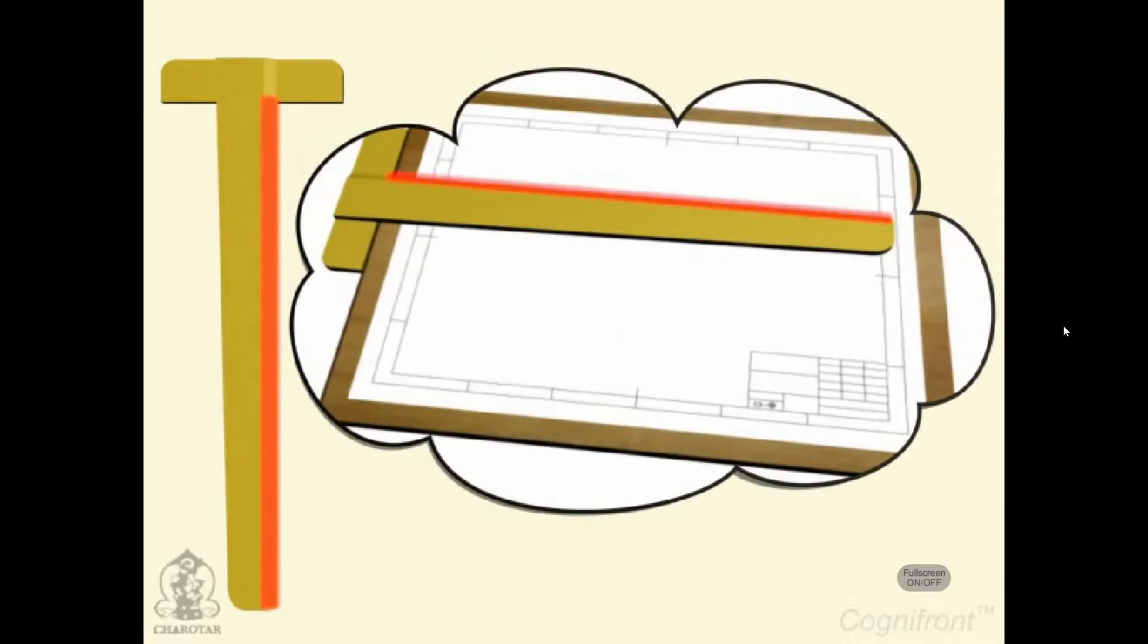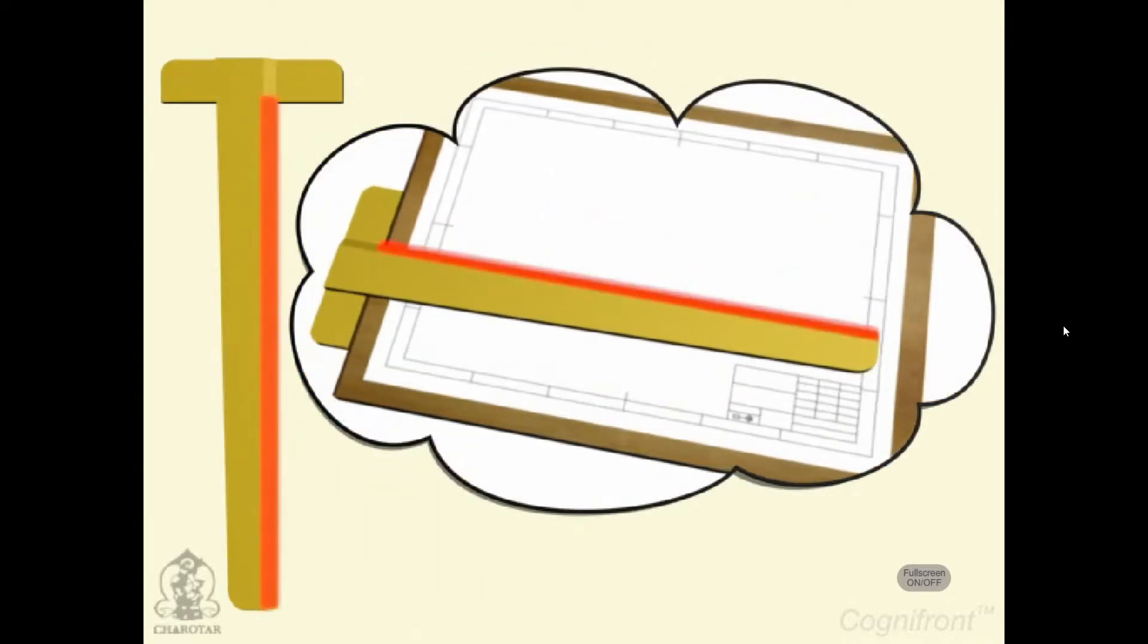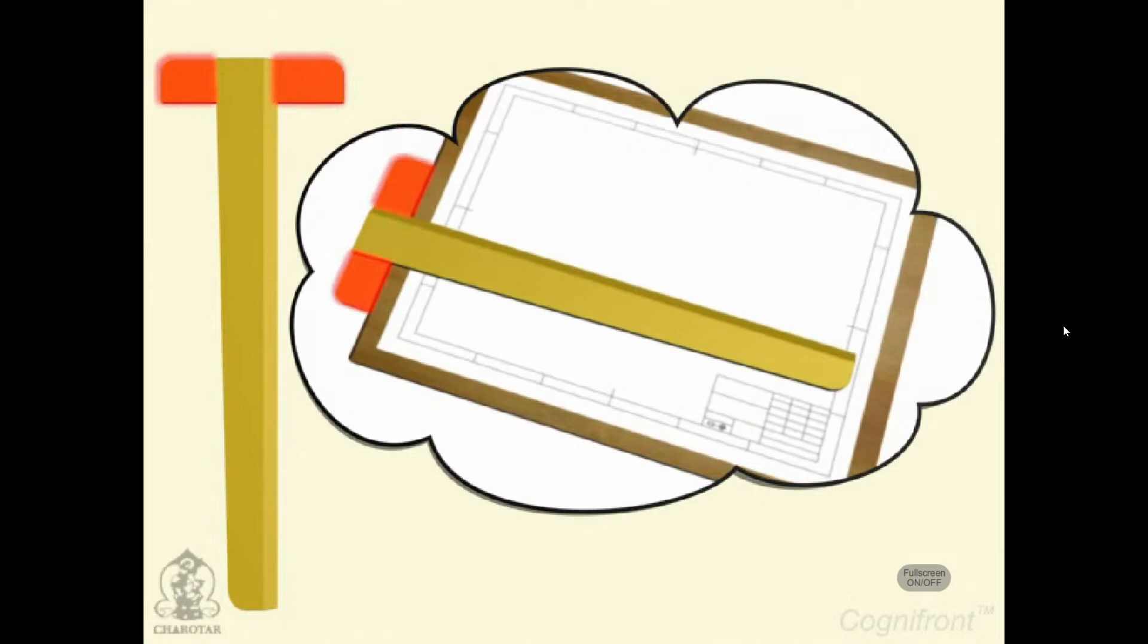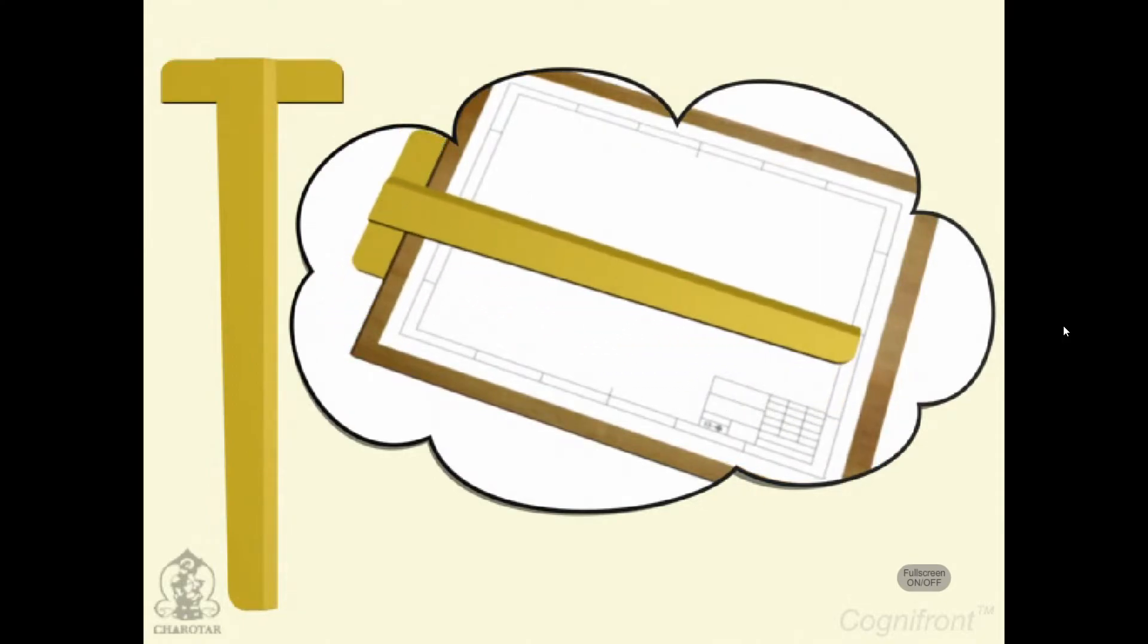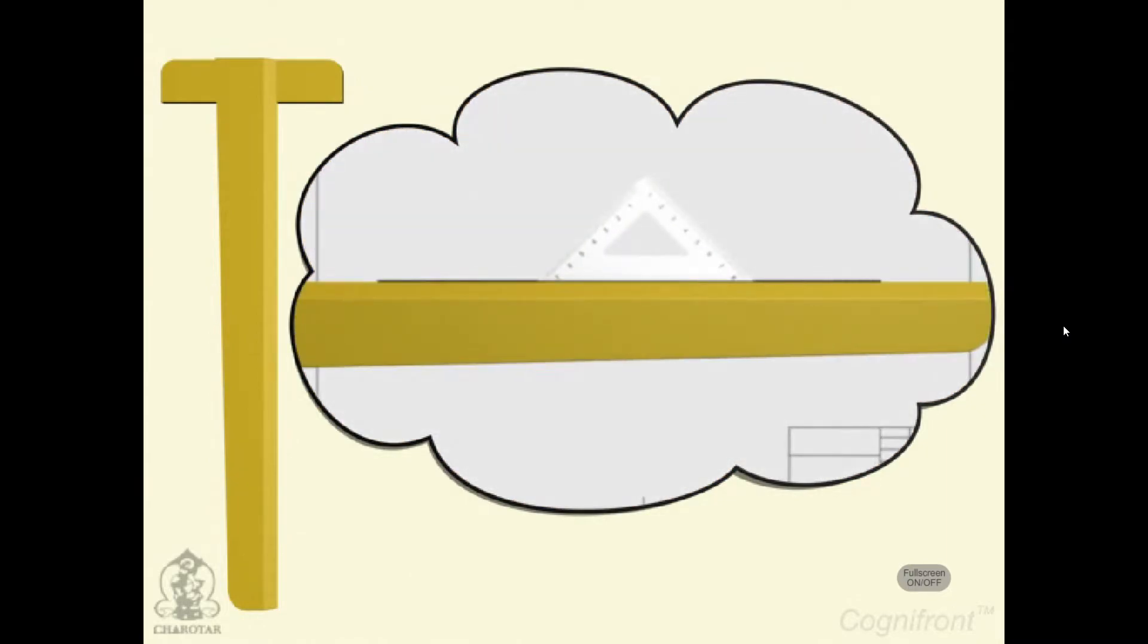The t-square as the name suggests is a t-shaped drawing tool. Its straight edge slides along the width of the drawing board with the help of a stop. It is useful in drawing straight lines and also serves as supporting edge for set squares while drawing inclined lines.